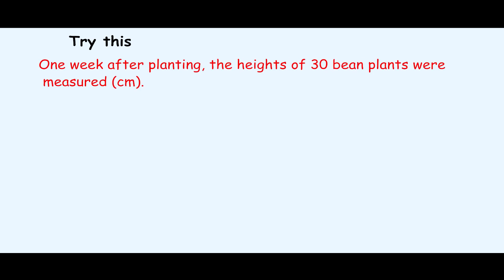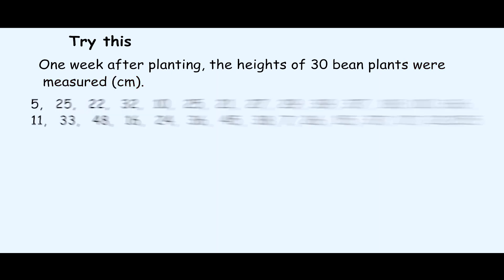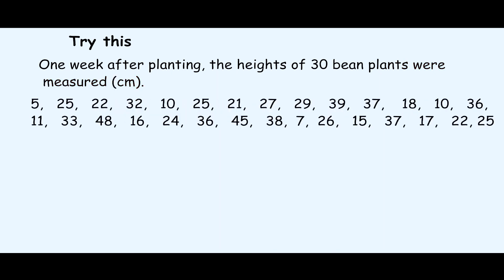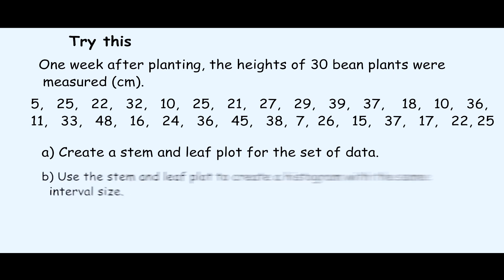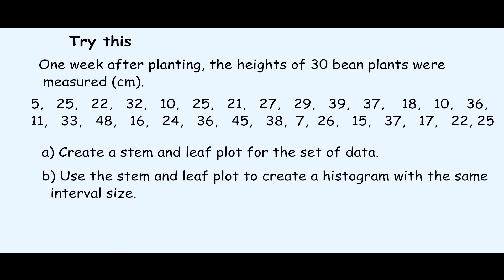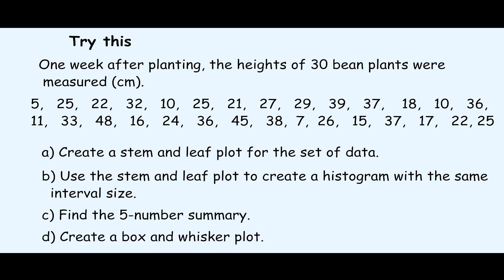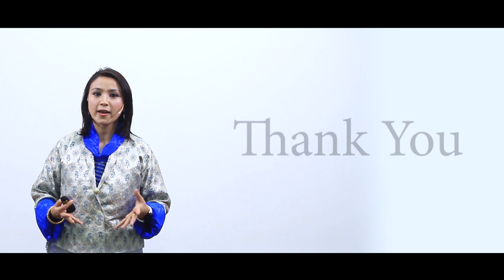As we come to the end of the session, I have a question for you to try. One week after planting, the heights of 30 bean plants were measured, and this is the set of data. You are going to create a stem and leaf plot, use the same intervals to create a histogram, find the five-number summary, and create a box and whisker plot. Thank you for attending my session. Do keep in touch with mathematics. Take care, stay safe, stay healthy, and keep washing your hands regularly. Thank you.